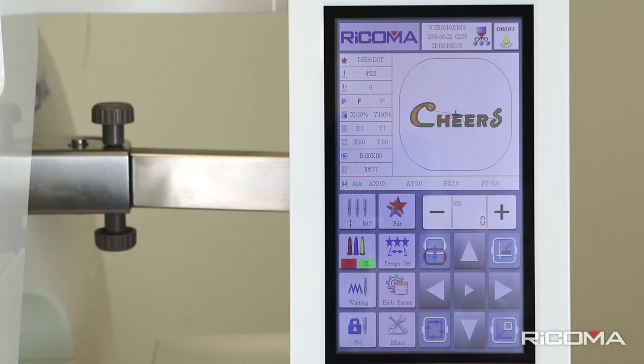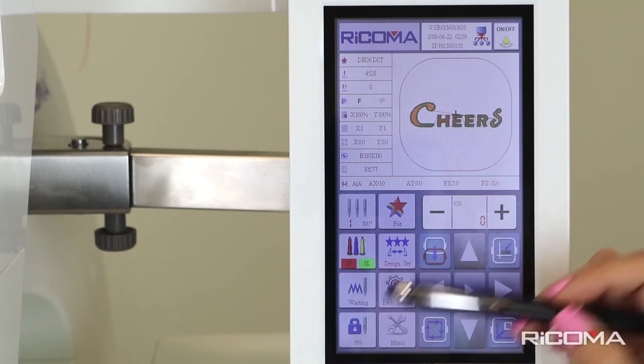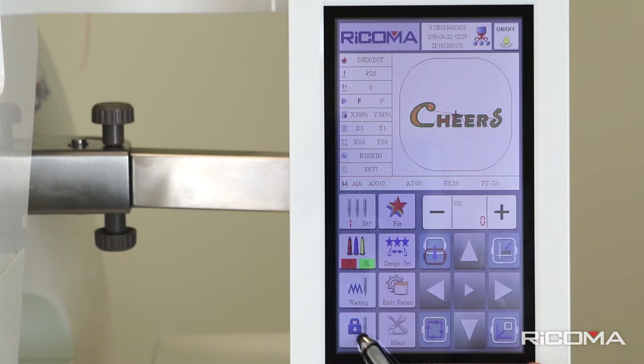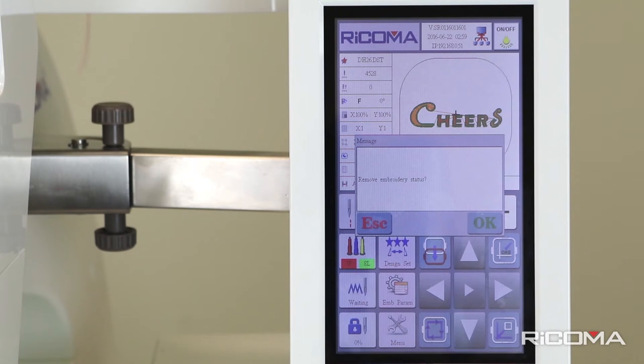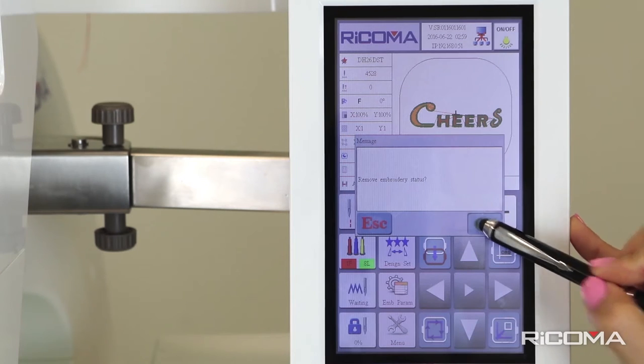Make sure the embroidery status is set to Unlocked. To unlock, press the Locked icon in row 4, column 1 of the panel. Press OK to remove the embroidery status.